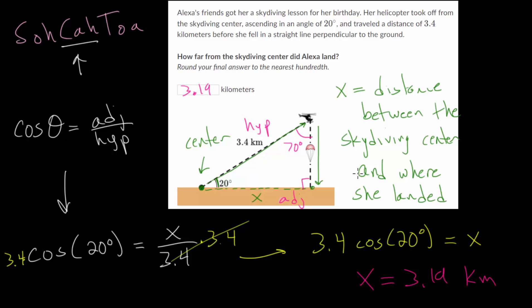And it did match up with kind of what we expected. We expected it to be somewhat close to our hypotenuse, since a 70 degree angle is fairly close to a 90 degree angle. So let's do one more problem.